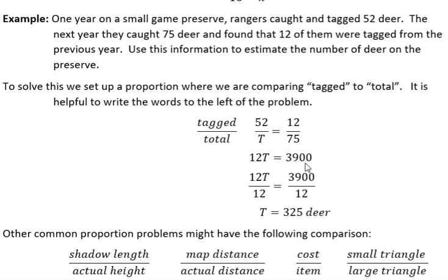The coefficient is the number that's multiplying the variable. In this case 12. So we divide both sides by 12. The 12 cancel each other out to one. So we just have T. And 3,900 divided by 12 means that there's an estimate of 325 deer in their park.